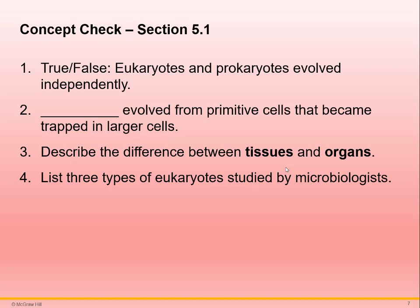The three types of eukaryotes we discussed were protozoans, fungi, algae, and helminths or worms. That is the end of Section 1.